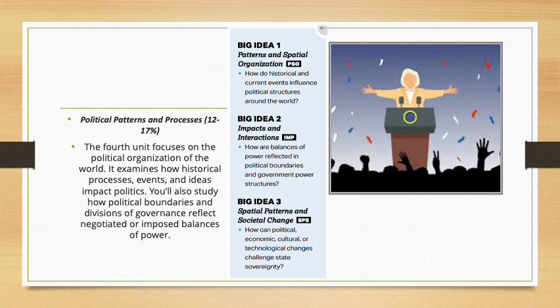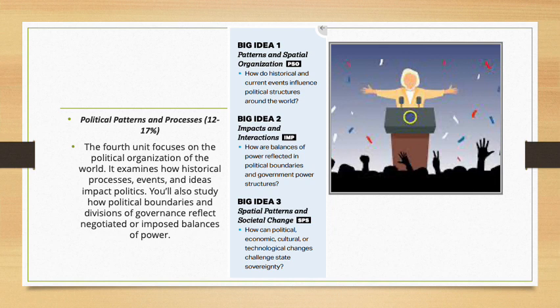Unit 4 is titled Political Patterns and Processes and carries 12 to 17% of your mark on the externals. This unit mainly focuses on the political organization of the world. It examines how historical processes, events, and ideas impact politics. You'll also study how political boundaries and divisions of governance reflect, negotiated, or imposed balances of power. Under patterns and spatial organization, the essential question is how do historical and current events influence political structures around the world? Under impacts and interactions, how are balances of power reflected in political boundaries and government power structures? And under spatial patterns and societal change, how can political, economic, cultural, or technological changes challenge state sovereignty?